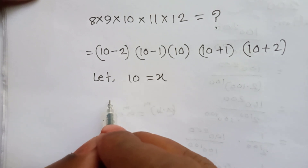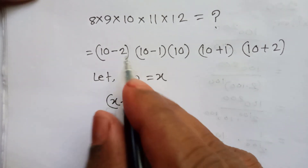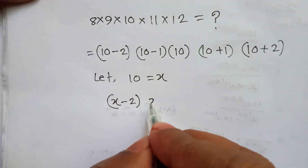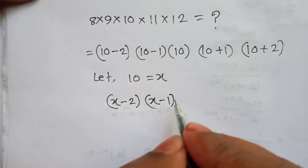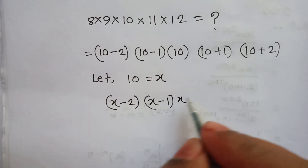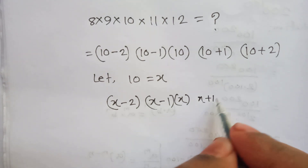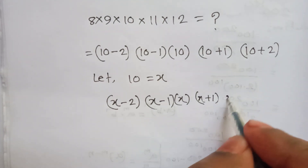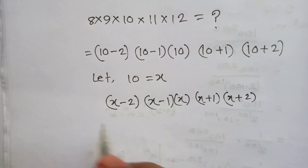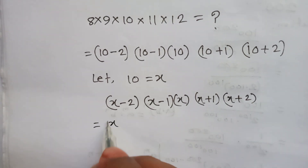Let 10 equal to x, so this can be written as (x minus 2) times (x minus 1) times x times (x plus 1) times (x plus 2).